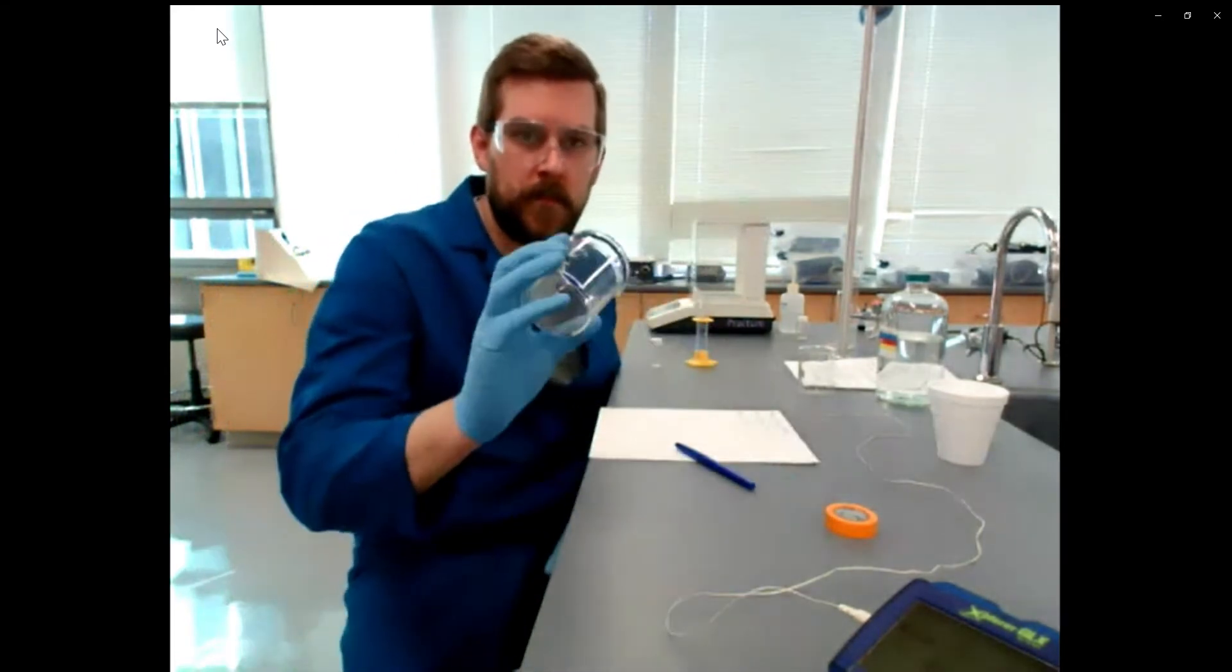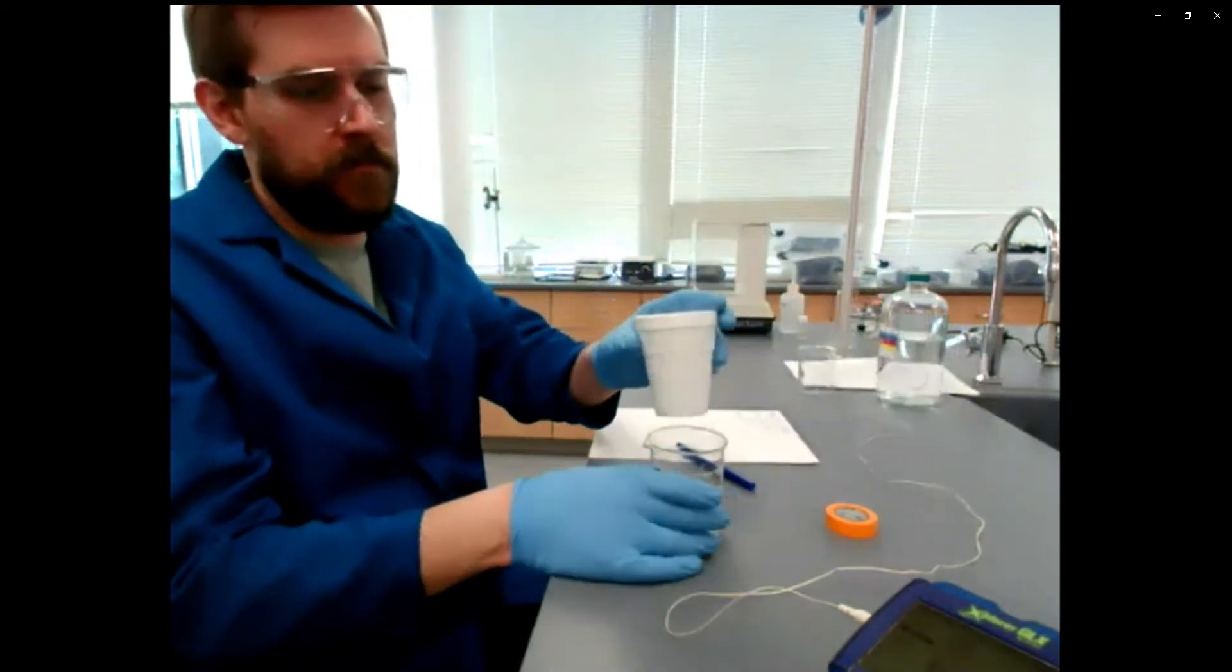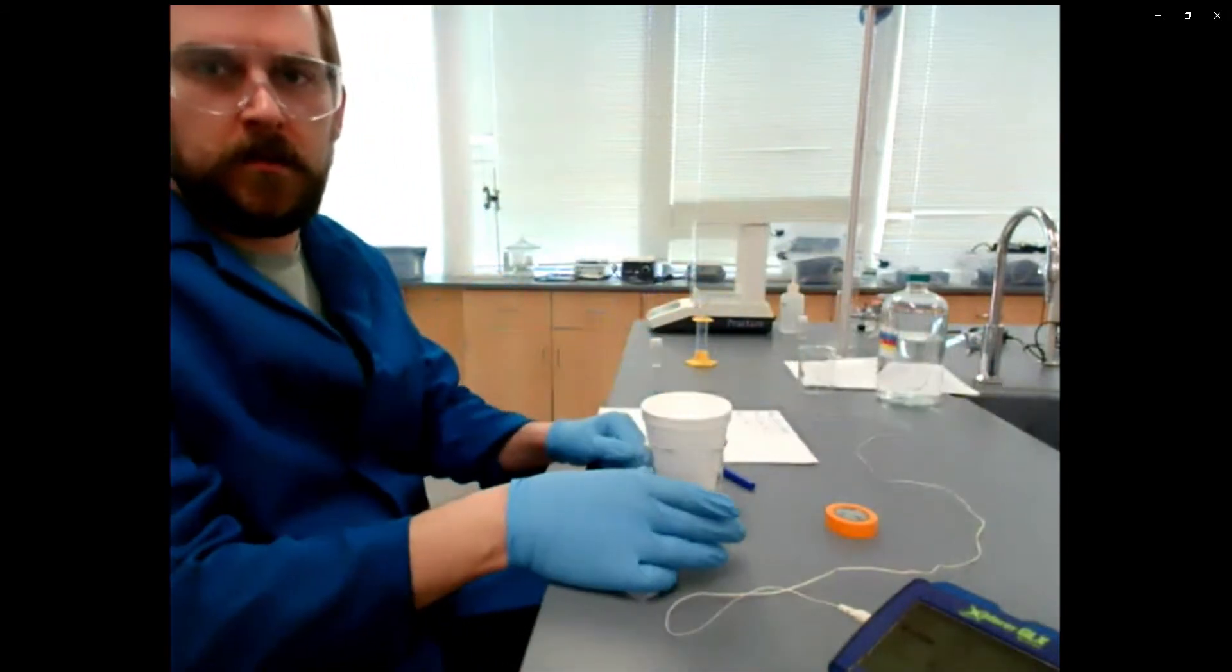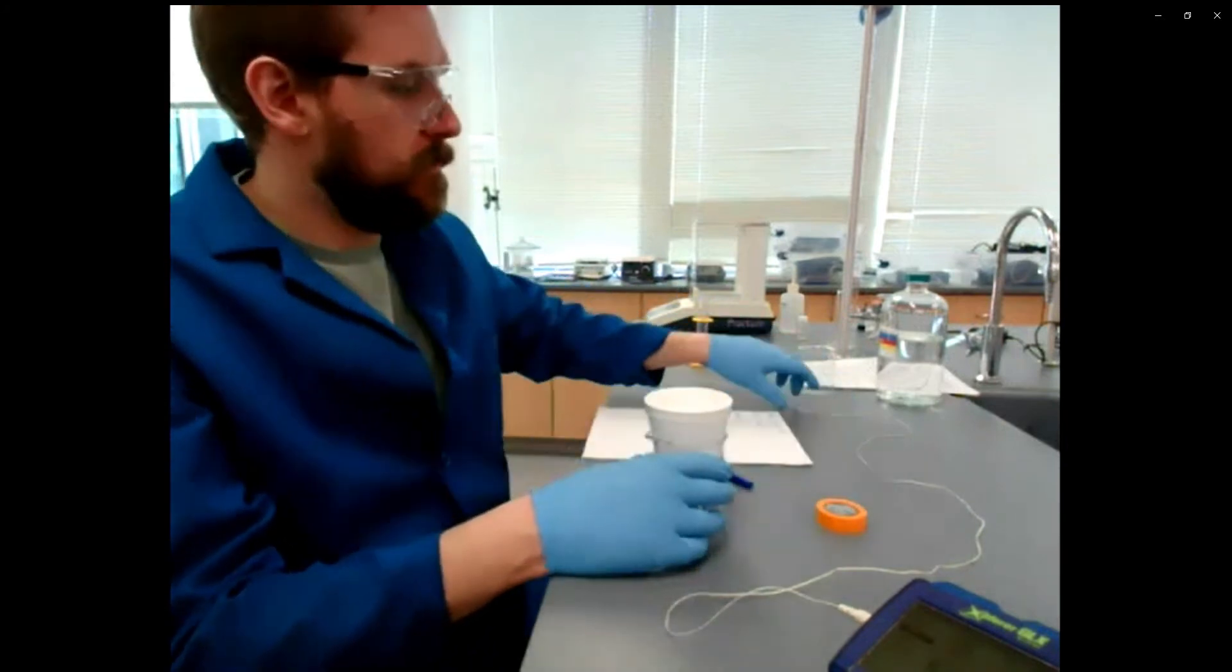First thing is we have to assemble a calorimeter using a beaker and a styrofoam cup. So we're putting the styrofoam cup in the beaker, tapping it in. And then the point of the beaker is to hold it without transferring a lot of heat from your hand.